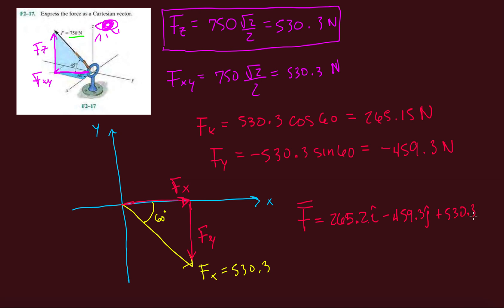530.3 K. And then do a sanity check real quick. So we're going to have plus an x component, minus a y component, and then plus a z component. And there you have it, your vector in Cartesian form.